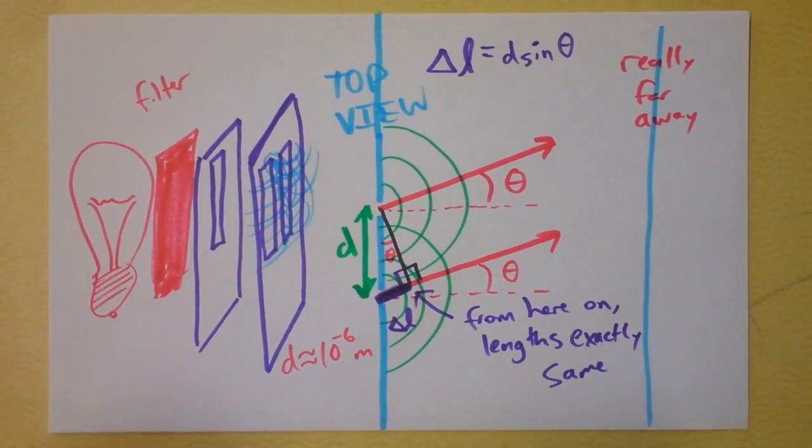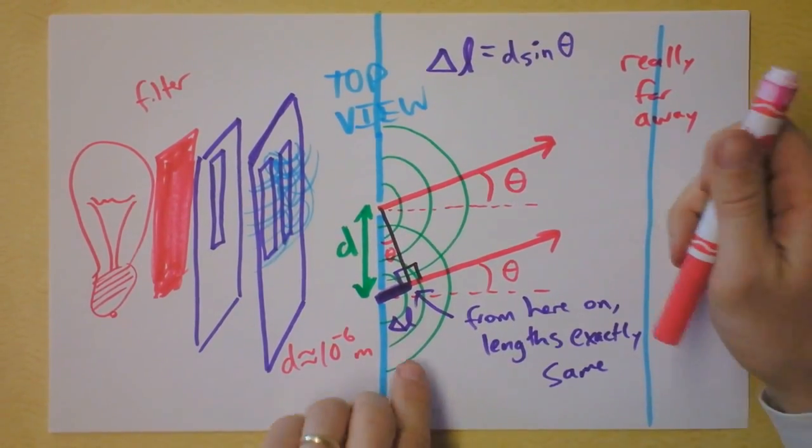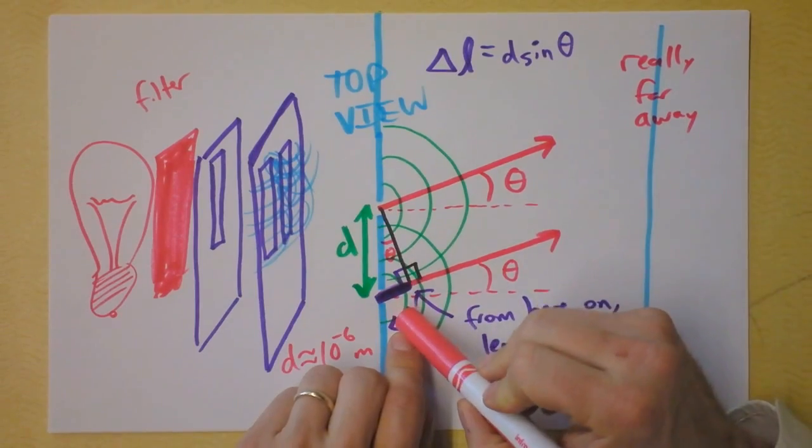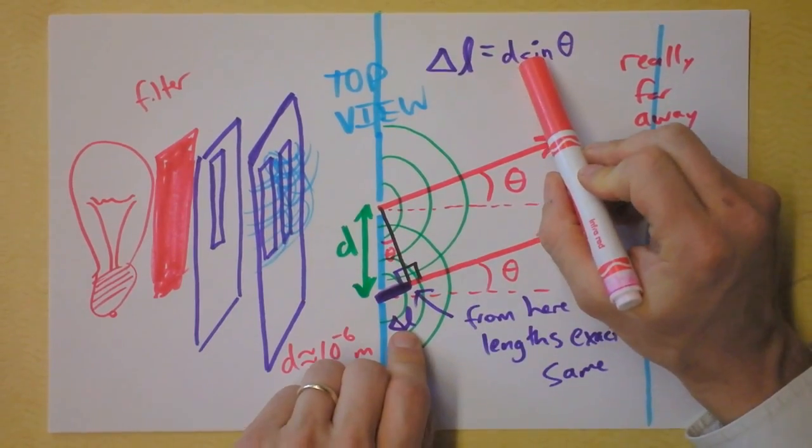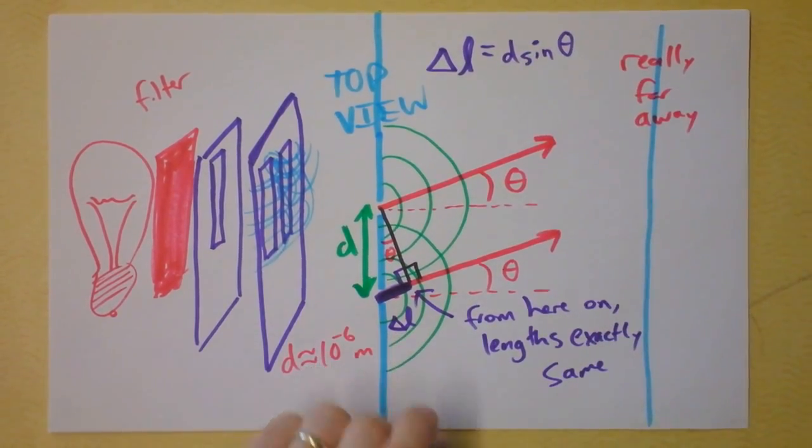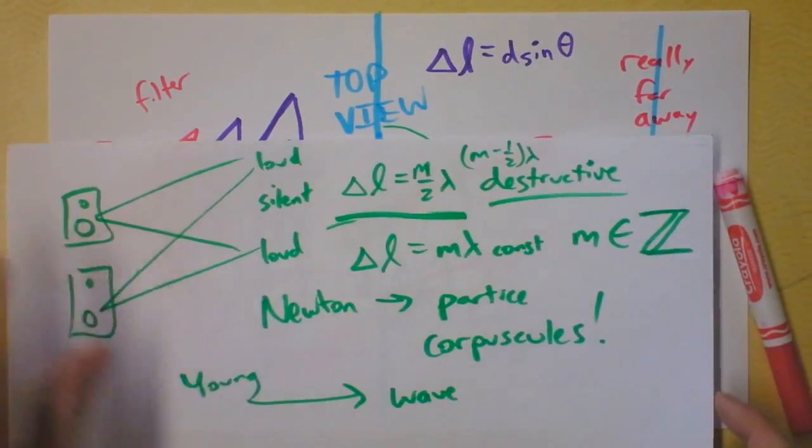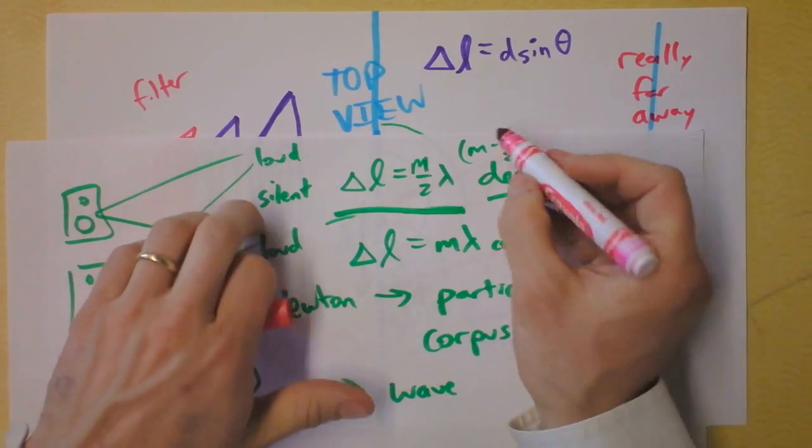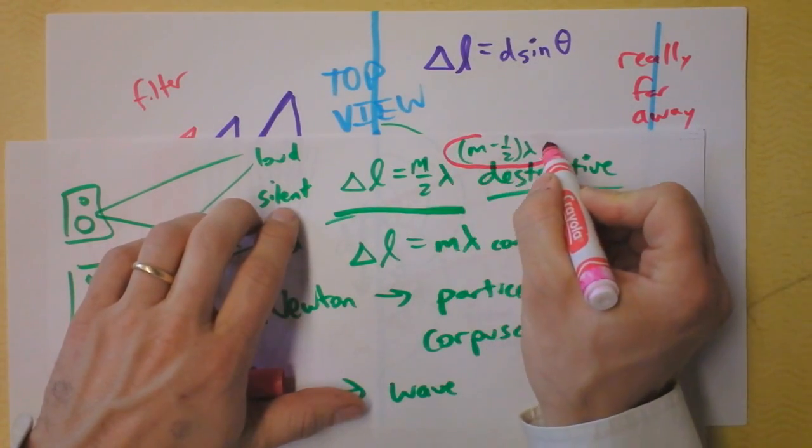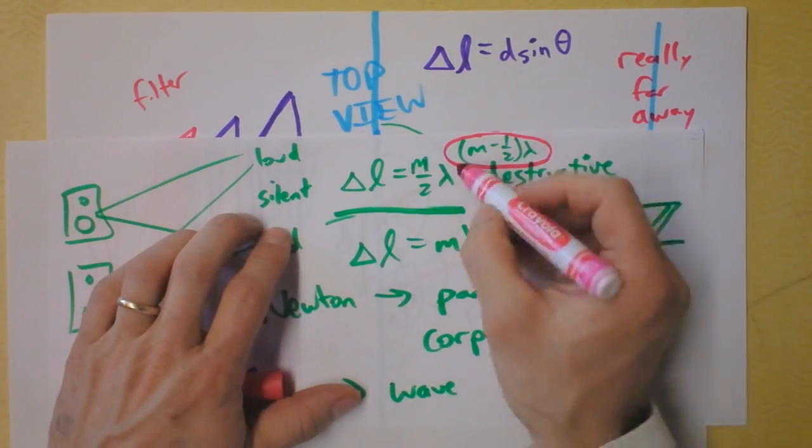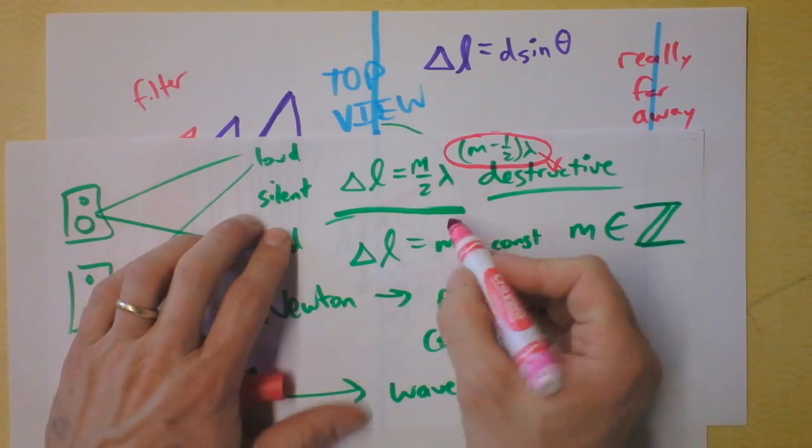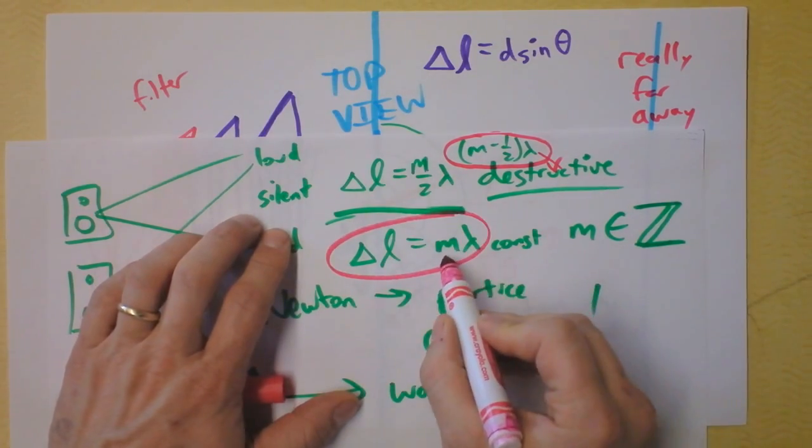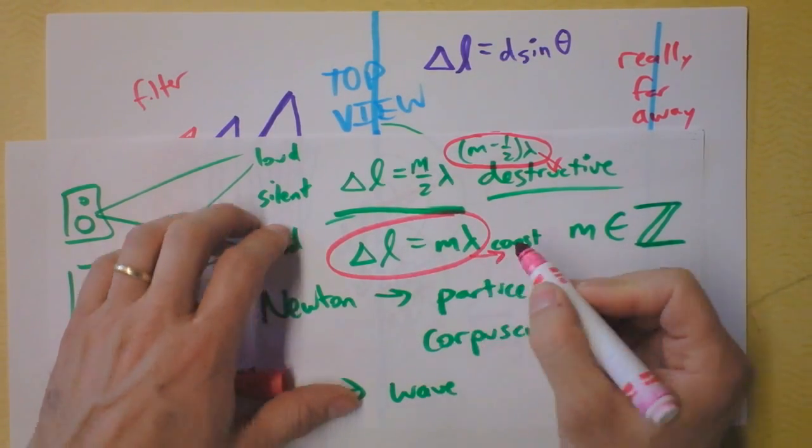So here's what you need to understand about this delta L. If the path length difference is D times sine theta, and if we go back to our previous slide where we said something about path length difference, remember we were arguing that if the path length difference is some half integer of the wavelength, then we get destructive interference, and if the path length difference is some integer wavelength, then we get constructive interference.